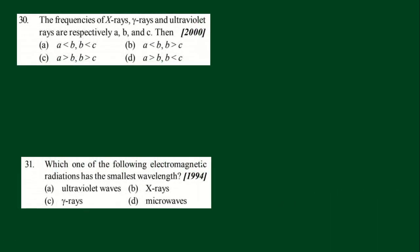Question 30: The frequency of x-rays, gamma rays and ultraviolet are respectively a, b, c. The frequency should be b greater than a, greater than c. So that is the order we can say. This is the most suitable answer. Second as the concept.